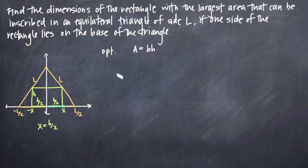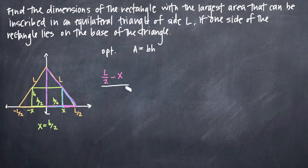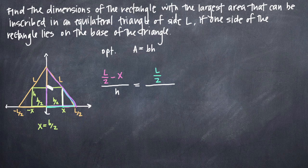The properties of similar triangles tell us that the sides of the small triangle must be proportional to the sides of the larger triangle. So if we call this distance L over 2 minus x, and divide that by H, that is equal to the corresponding ratio in the larger triangle: L over 2 divided by Y, where Y is the height of the full triangle — the only distance we don't yet know.